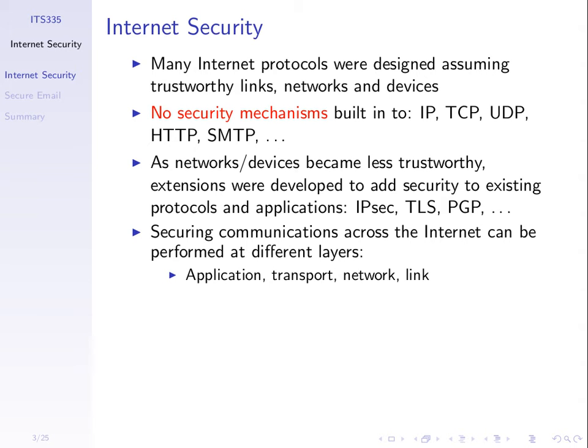At the transport level or network layer level, we can encrypt the IP datagram or at least the data inside using IPsec. Or the fourth case we finished on last week: at the link level, use the link technology to encrypt — especially wireless link technologies support encryption.